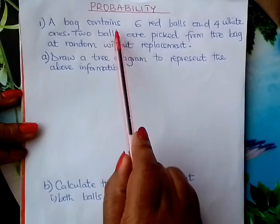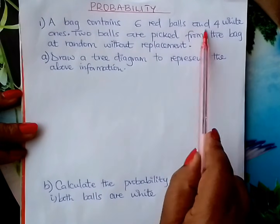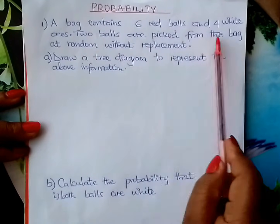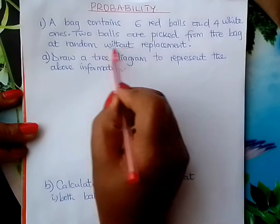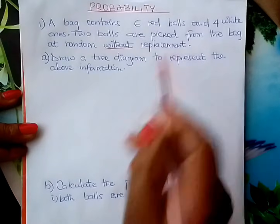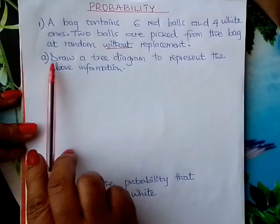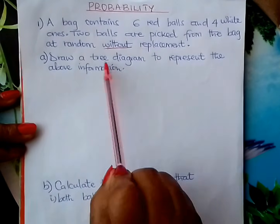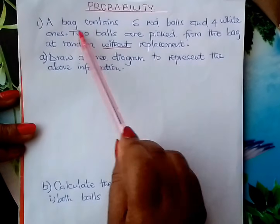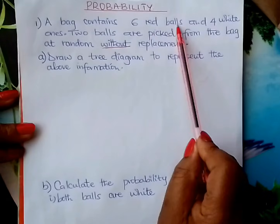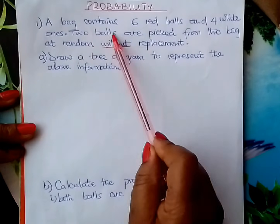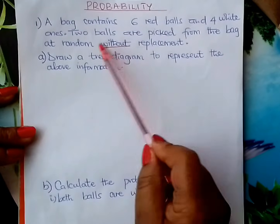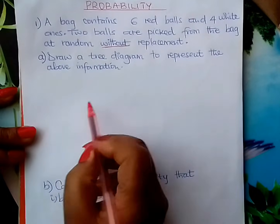We are told that a bag contains 6 red balls and 4 white ones. 2 balls are picked from the bag at random without replacement. So how do we draw this tree diagram?